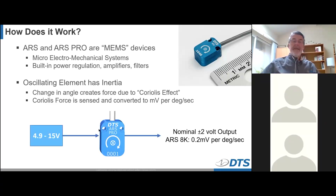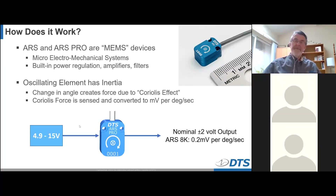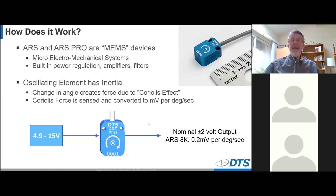Here we see an ARS Pro. We supply any voltage from 4.9 to roughly 15 volts — typical 5 and 10 volt excitation. With proper excitation, we get a nominal output of plus and minus 2 volts. For example, the ARS 8K — 8,000 degrees per second full scale — puts out about 0.2 millivolts per degree per second.